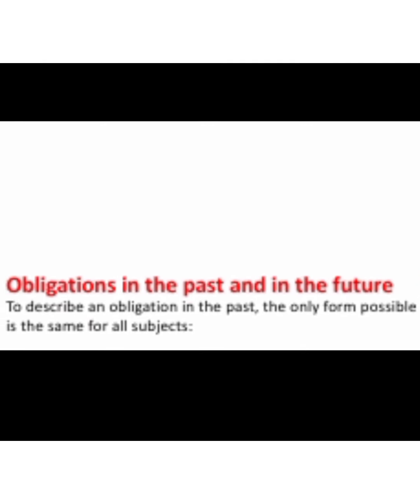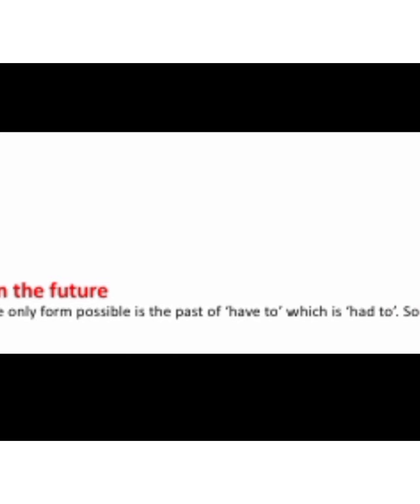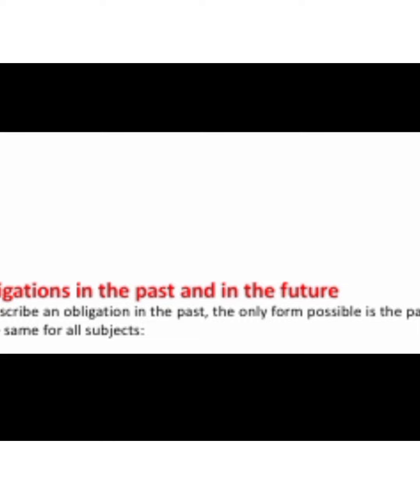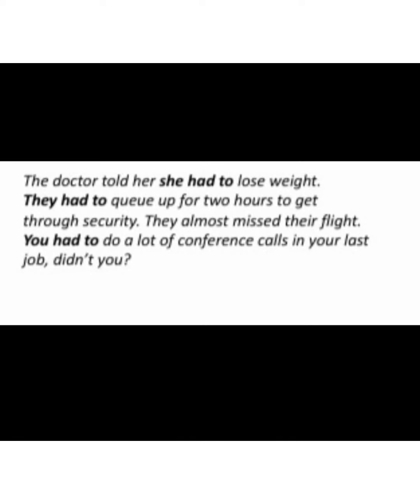To show obligations in the past and in the future, the only form possible in the past of 'have to' is 'had to.' So we have to use 'had to' as the past form of must. Examples: 'The doctor told her she had to lose weight,' 'They had to queue up for two hours to get through security — they almost missed their flight,' 'You had to do a lot of conference calls in your last job, didn't you?' These are examples where we use 'had to' for past obligations.